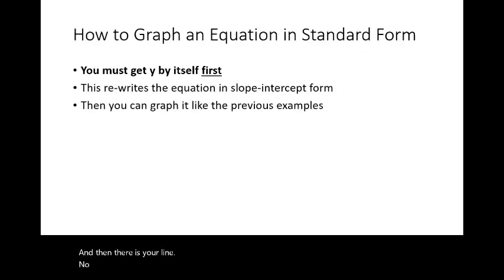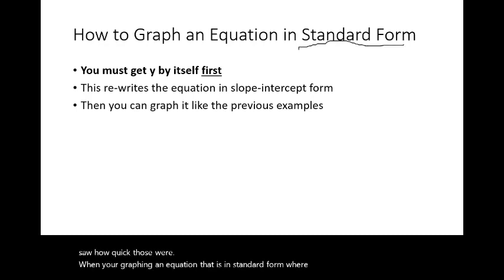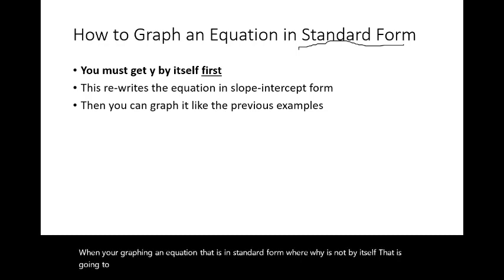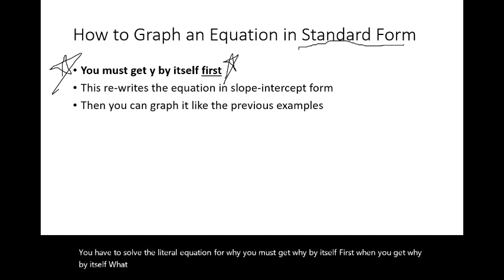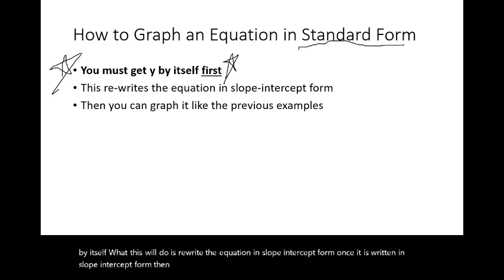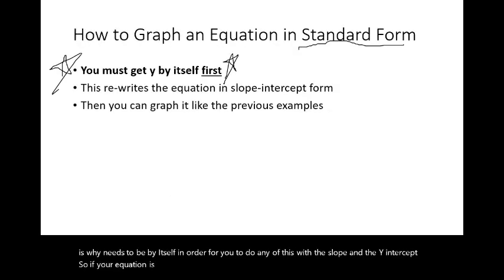Graphing equations in slope-intercept form is easy. When graphing an equation in standard form — where y is not by itself — you must do some work before graphing. You have to solve the equation for y first, getting y by itself. This rewrites the equation in slope-intercept form, and then you can graph it using the same methods. The key is: y must be by itself before you can use slope and y-intercept.